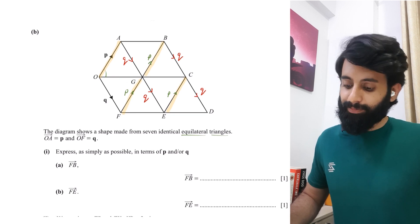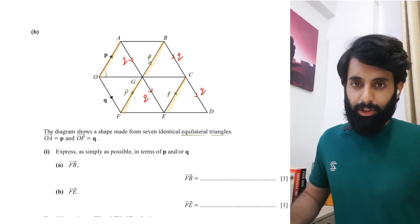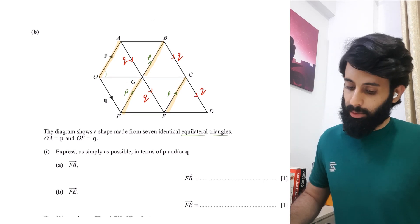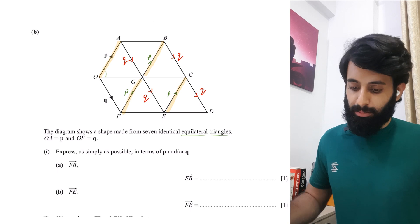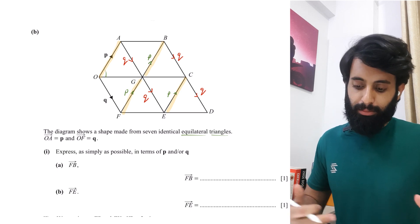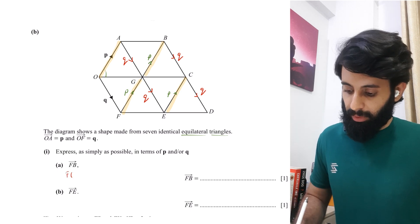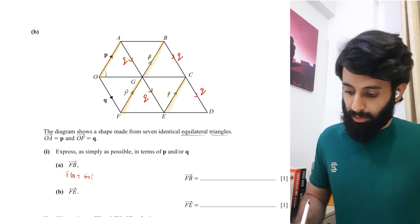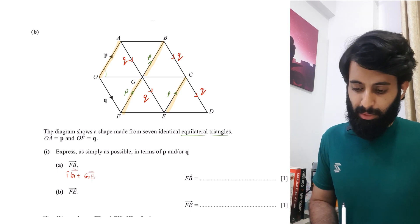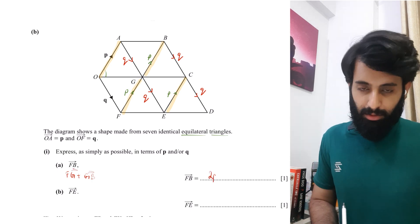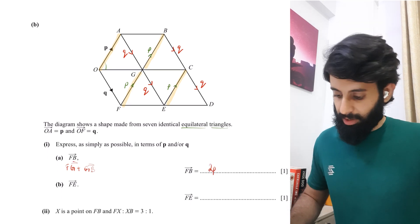Now let's see what the question is asking for. The first part asks you to find FB. FB can be achieved by going from F to G and then from G to B. That's simply P plus P, which is 2P. Pretty simple.